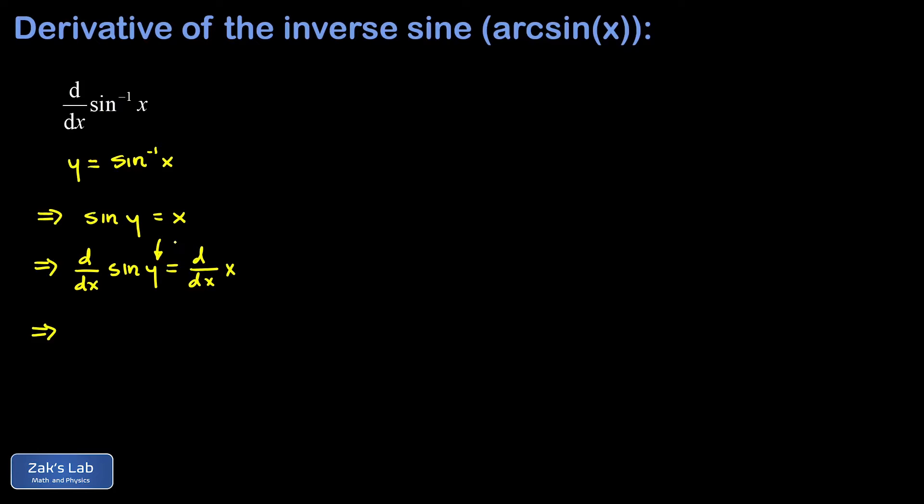So I'm looking at a function of a function here. The chain rule says we start by differentiating sine y with respect to y—of course that just gives me the cosine of y—but then I have to tack on the derivative of y with respect to x. On the right-hand side, I have the first derivative of x, which is just 1.